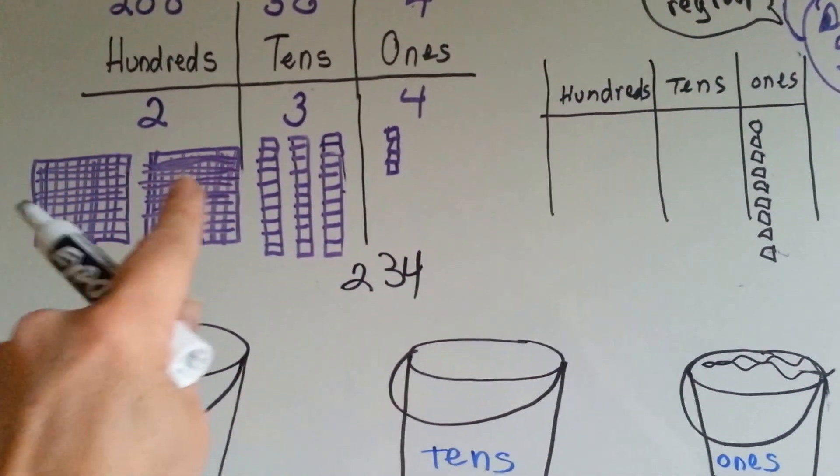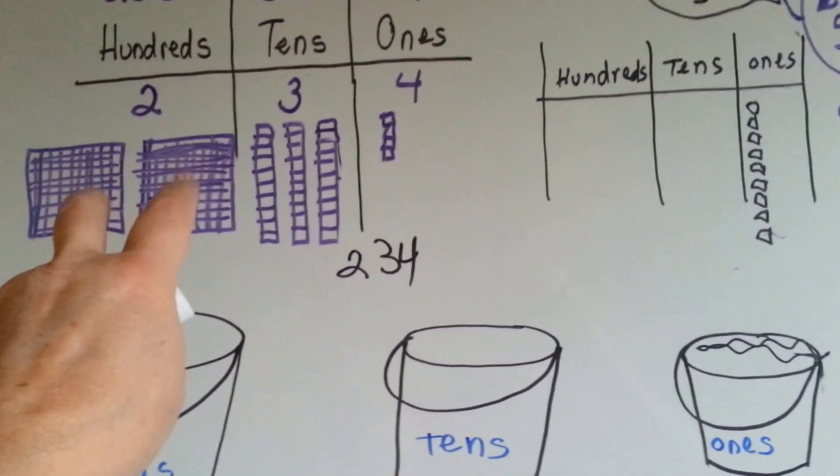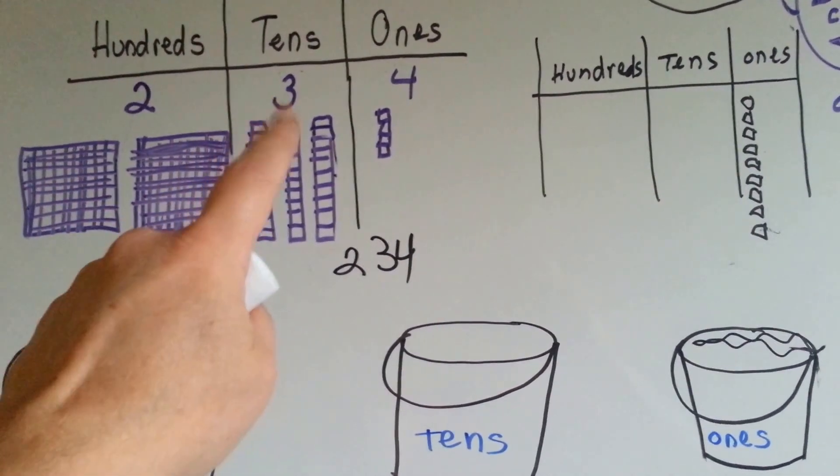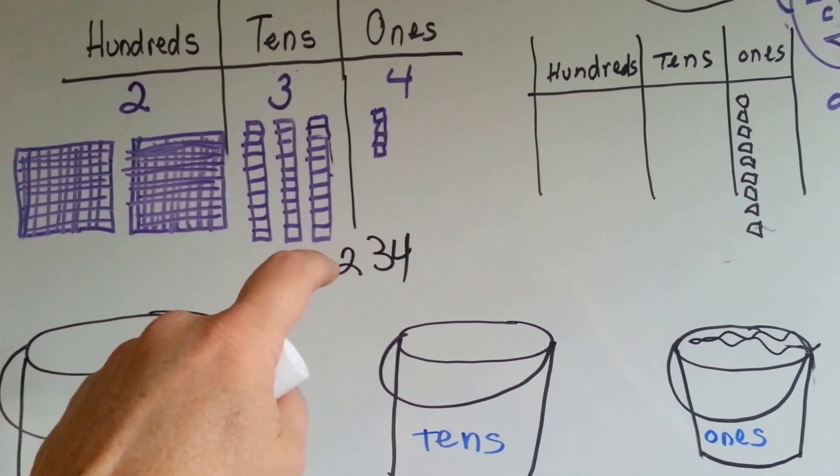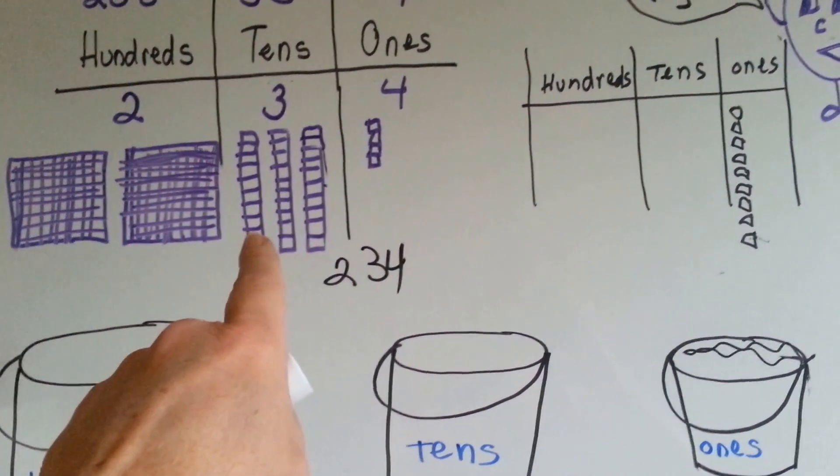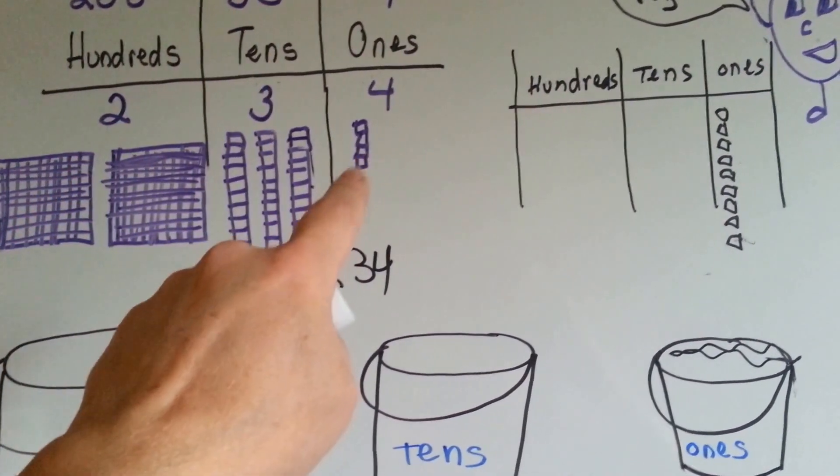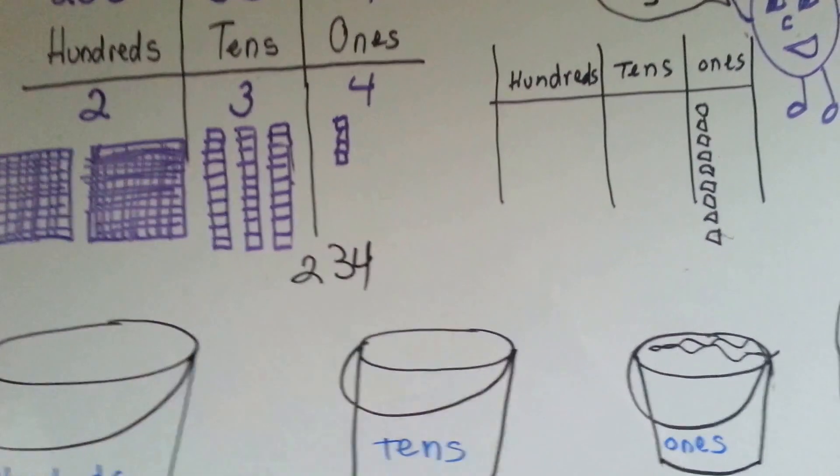This is 100 squares and this is 100 squares. That's 2 hundreds. This is 10 squares, this is 10 squares, and this is 10 squares. So you have 3 tens, or 30. Here's 4 little squares, so you have 4 ones.